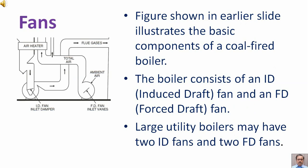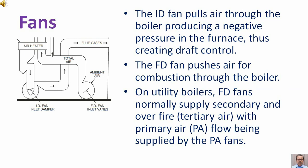The figure shown in the earlier slide illustrates the basic components of a coal-fired boiler. The boiler consists of an ID (induced draft) fan and an FD (forced draft) fan. Large utility boilers may have two ID fans and two FD fans. The ID fan pulls air through the boiler producing a negative pressure in the furnace, thus creating draft control. The FD fan pushes air for combustion through the boiler.